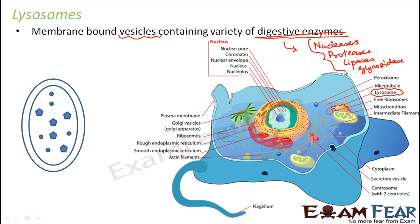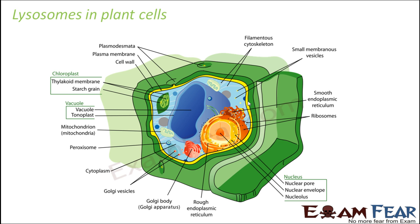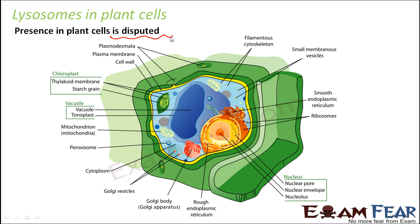Let us see where exactly the lysosome is present in the animal cell. Lysosomes are present quite near to the mitochondria. In plant cells, the presence of lysosomes is disputed — some say that lysosomes are present in plant cells, some say that they are not present in plant cells.